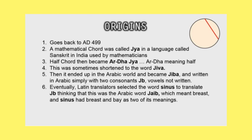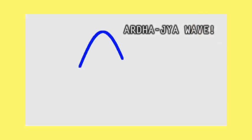Eventually, Latin translators selected the word Sinus to translate Jib, thinking that this was the Arabic word Jabe, which meant breast. And Sinus had breast and bay as two of its meanings. Finally, in English, Sinus was then imported to the word sine. So next time you see a sine wave, say, oh, look, it's an Ardha Jaya wave. And everyone will think you've gone crazy.